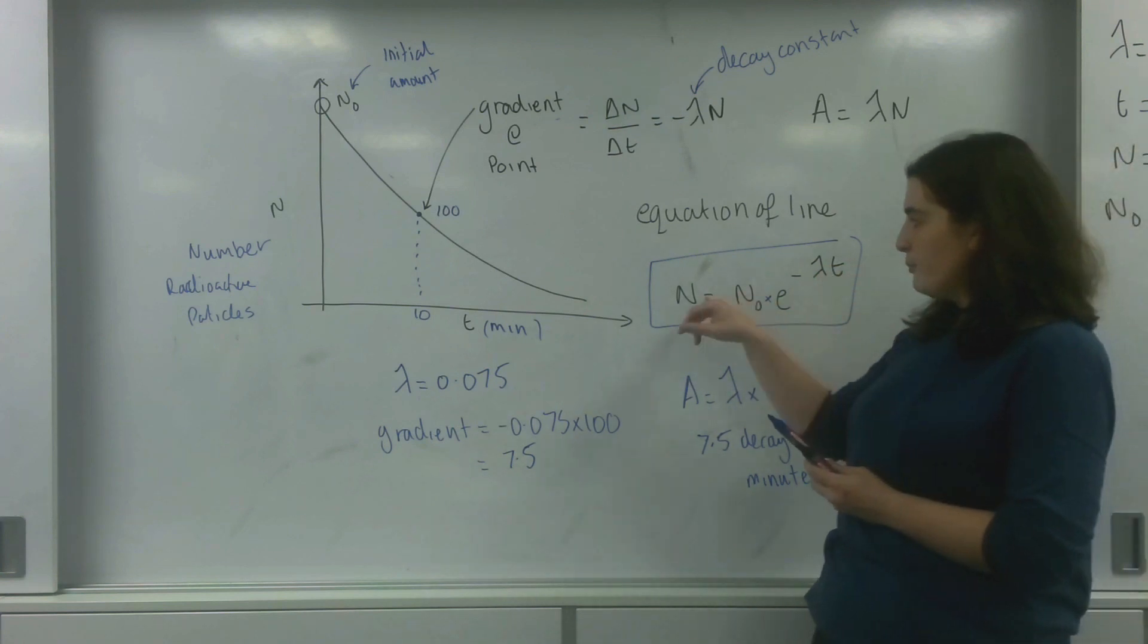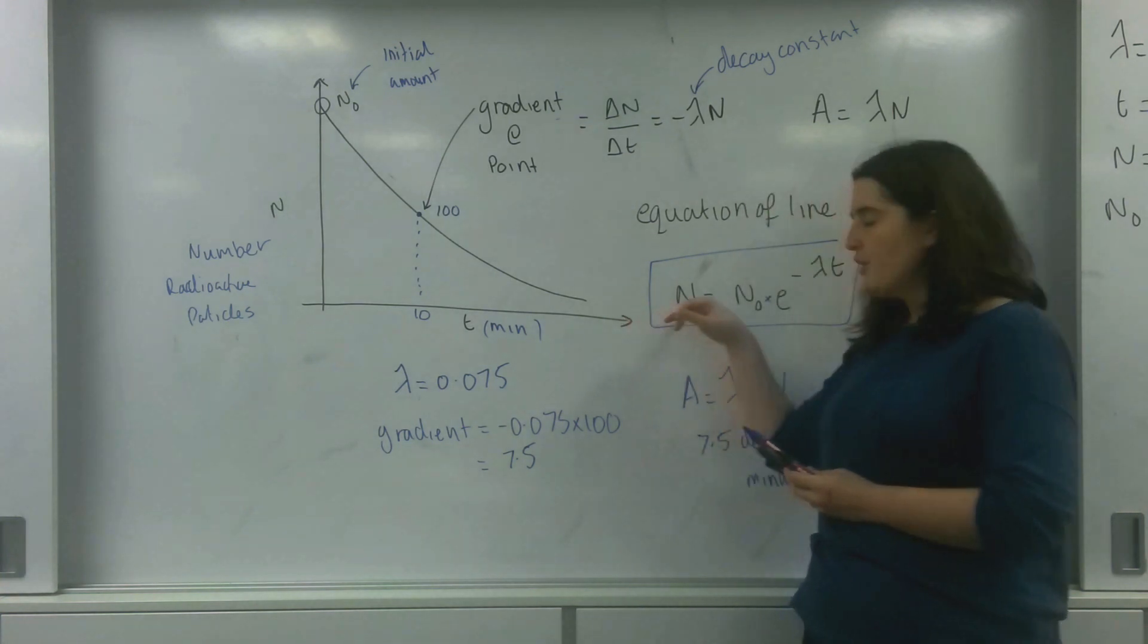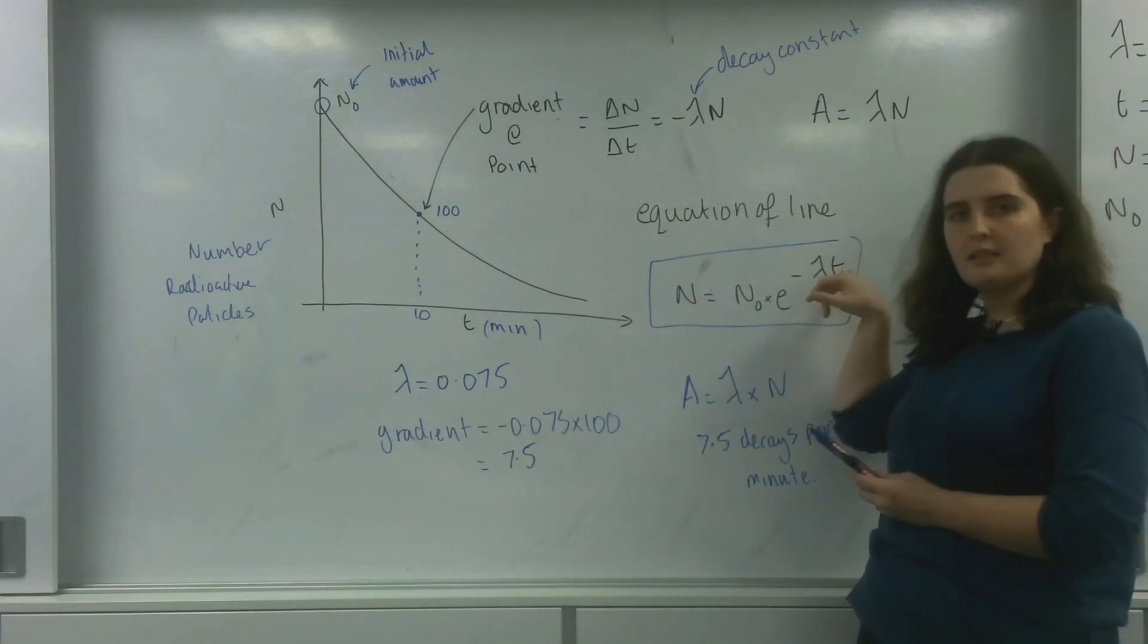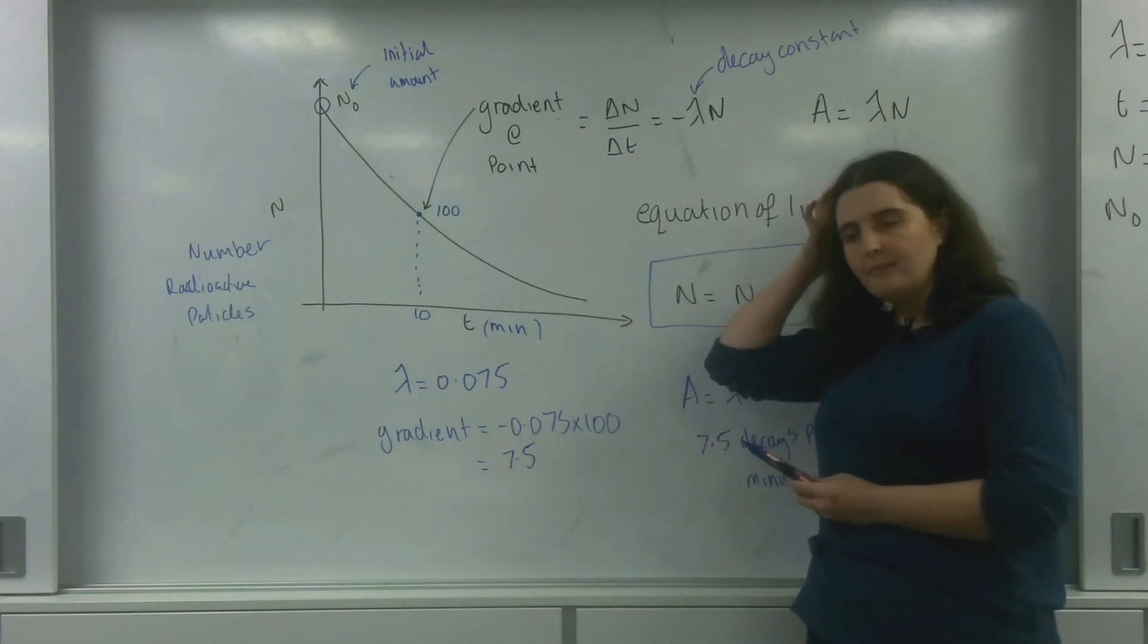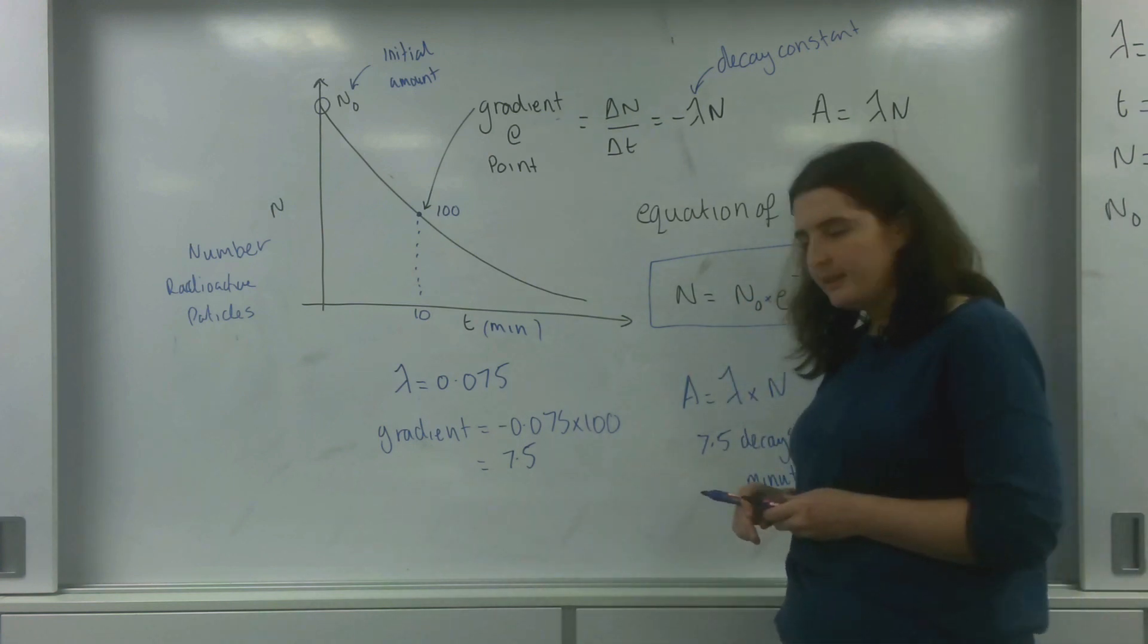So you are able to find the number of particles at any point if you know how much it should decay by and this time. I'm going to give you an example of how you can use this formula.